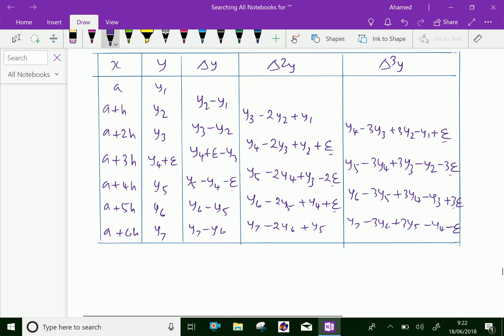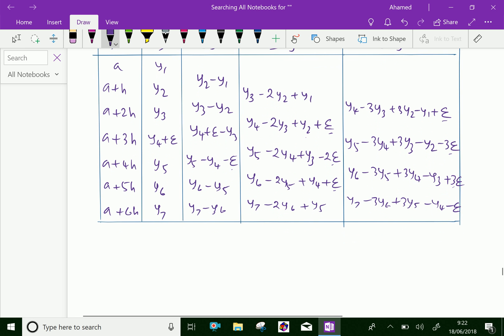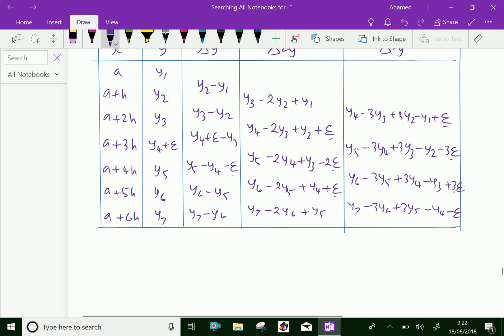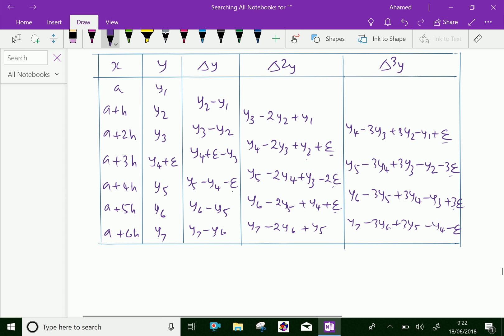The algebraic sum of the errors in any column of difference is always 0. This coefficient is minus 1 and plus 1, it becomes 0. Look at this last column: 1 minus 3 plus 3 minus 1, the algebraic coefficient is also 0.